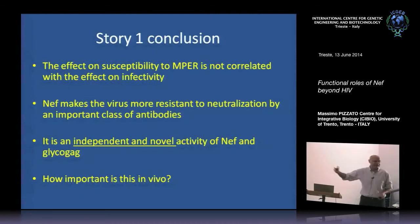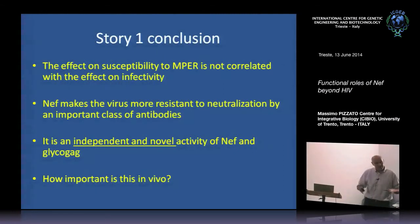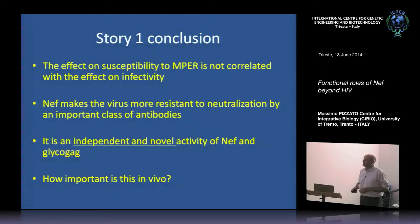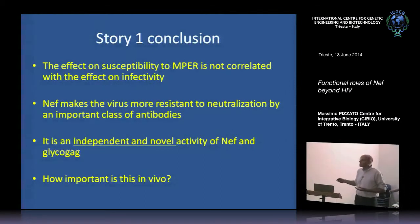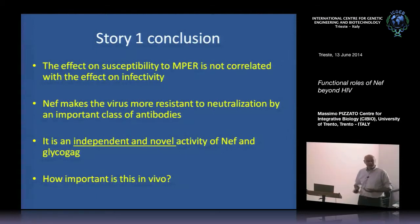We found a phenotype — neutralization resistance via MPER antibodies — that has nothing to do with infectivity, but still has relevance because it increases neutralization resistance. The conclusion of this first story is that NEF makes the virus more resistant to neutralization by MPER antibodies, and this is a novel, independent activity of NEF.